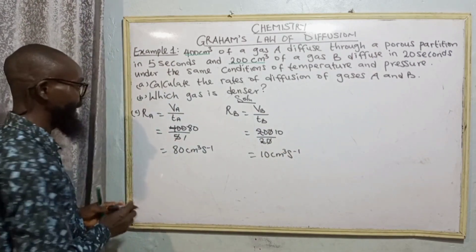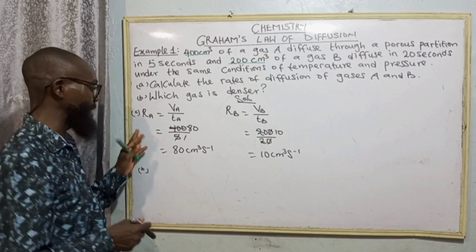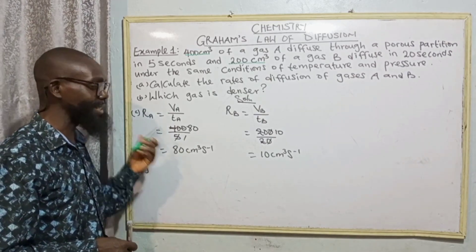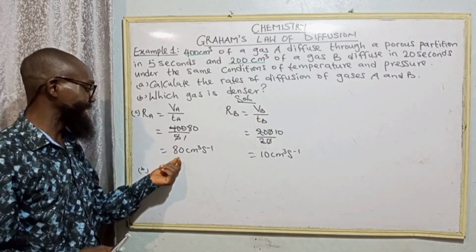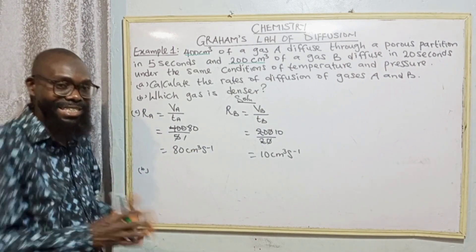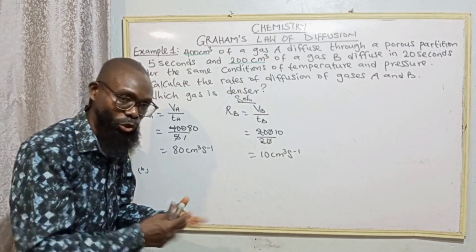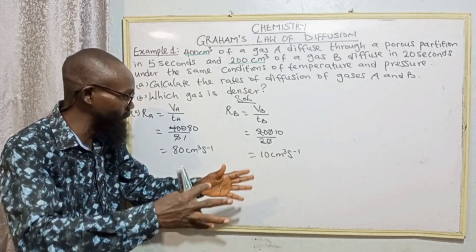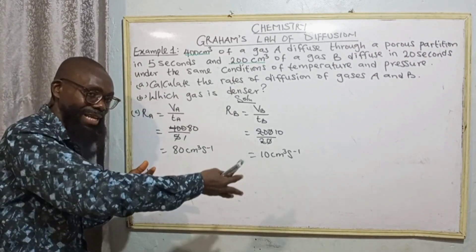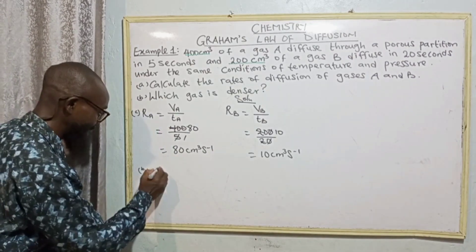To calculate the rate of diffusion of gases A and B — Question B: which gas is denser? The rate of diffusion of gas A is 80 and gas B is 10, which means gas A is faster than gas B. This means gas A is lighter compared to gas B. So gas B is the denser gas, meaning it is heavier. The rate of spreading of gas A is 80 while gas B is 10. You can see that 80 is more than 10. Gas B is denser.